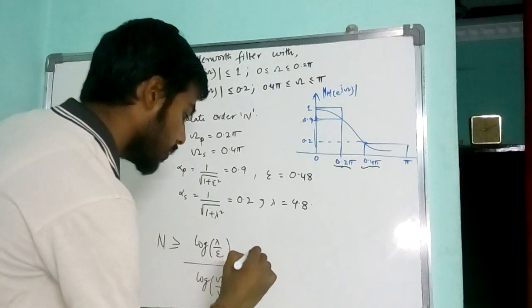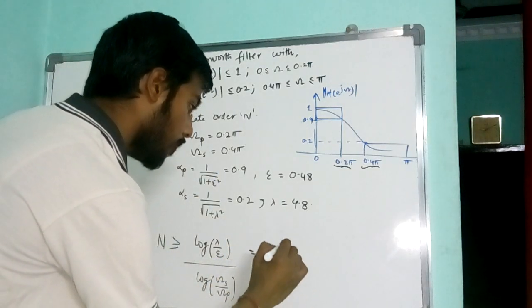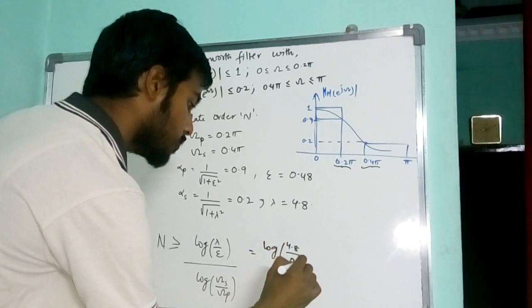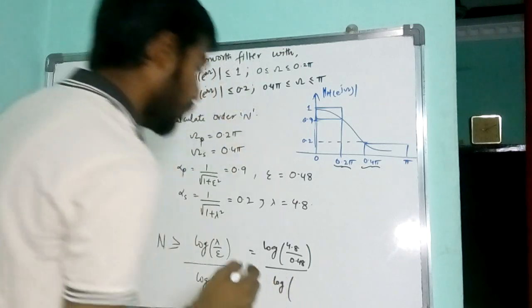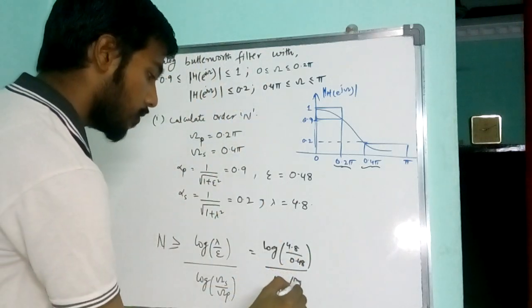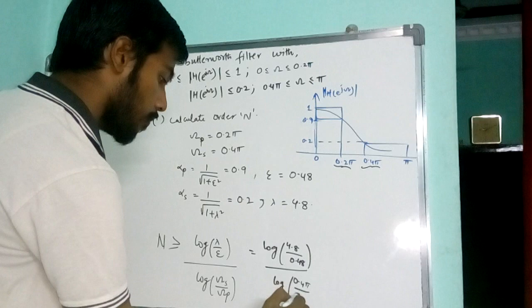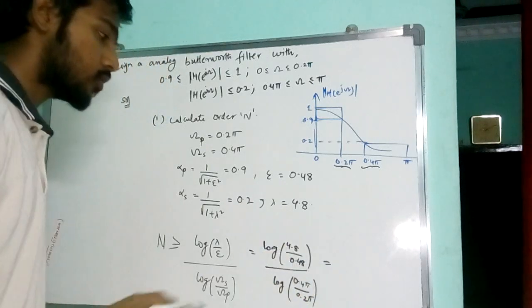So substituting the values here, log of 4.8 by 0.48 by log of, so my n value is 0.45 by 0.25.